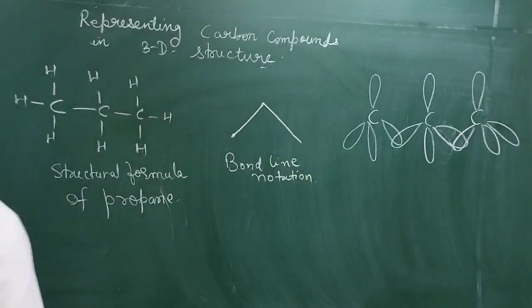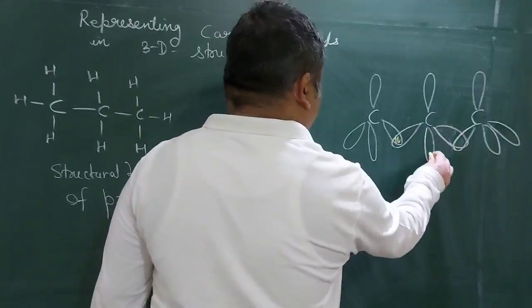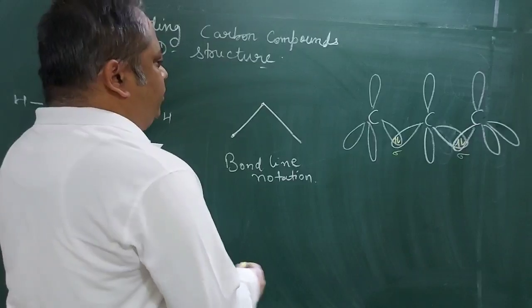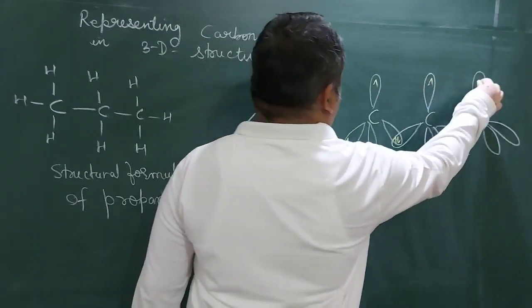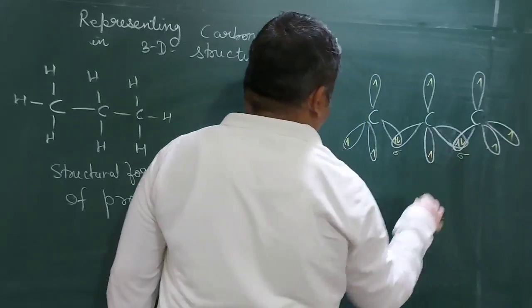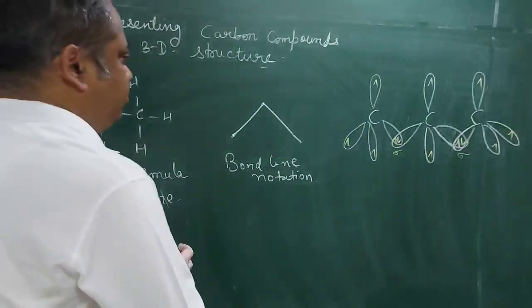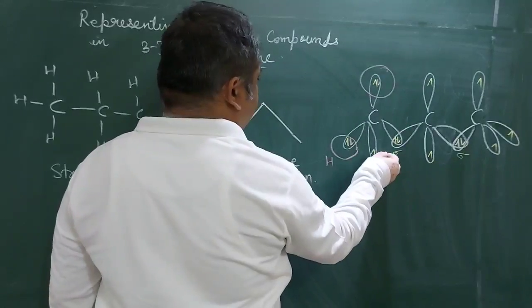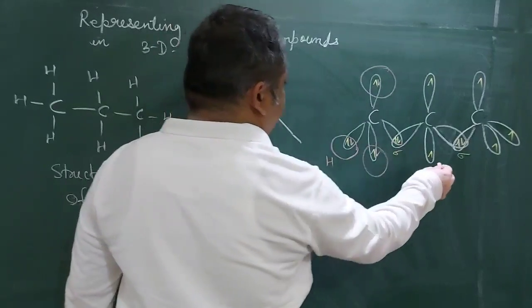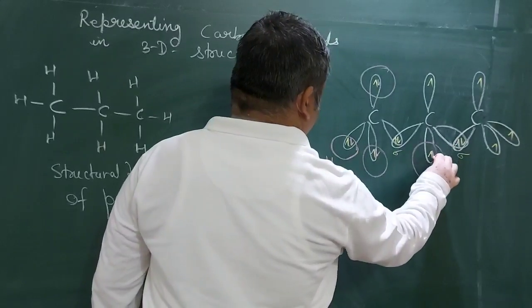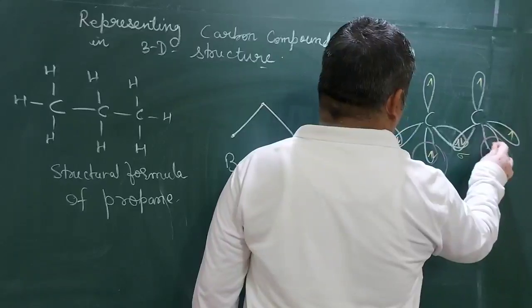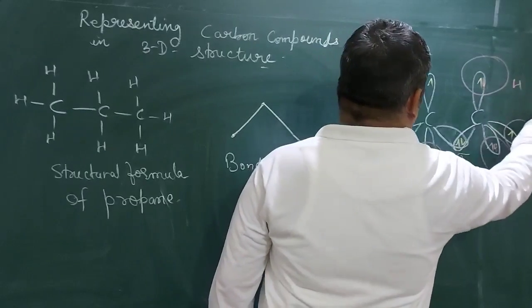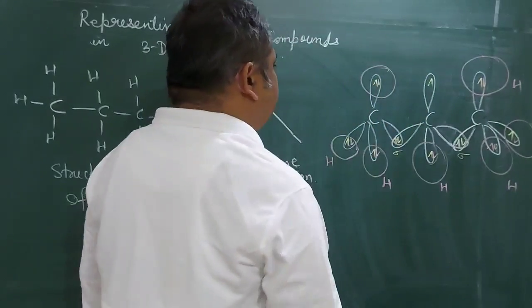So one electron will be there in each, one electron each, so two electrons form one sigma bond, another sigma bond. Now it also contains one electron each like this. Now hydrogen can come and can share its electron. So this is the orbital picture.